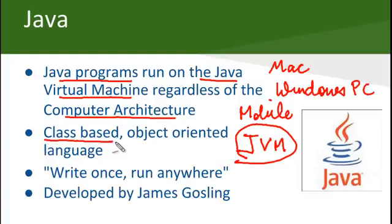Now, Java is class-based and it's an object-oriented language. These terms might sound big to you right now but don't worry about them. Just understand it's an object-oriented programming language.